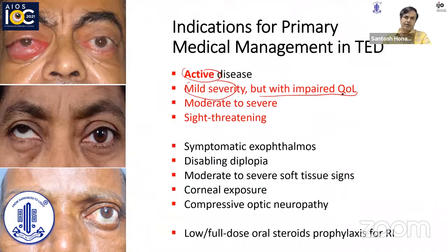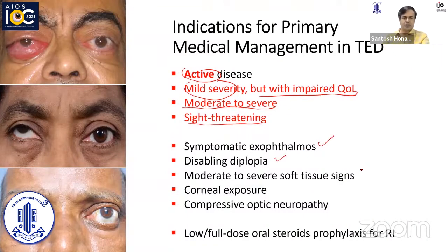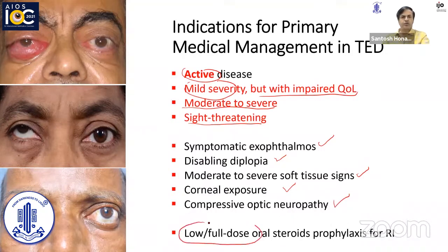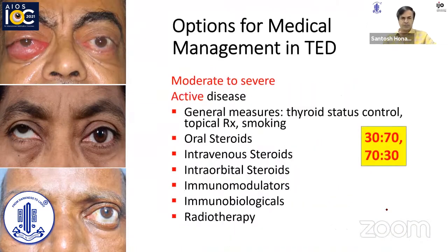Medical management is specifically chosen for moderate to severe disease or sight-threatening disease — patients having symptomatic exophthalmos, disabling diplopia in primary position and downgaze, moderate to severe soft tissue signs, corneal exposure not responding to lubricants, and compressive optic neuropathy. Medical management is also indicated in the form of low or full-dose oral steroid prophylaxis for patients who are supposed to undergo radio iodine.